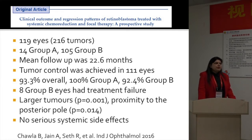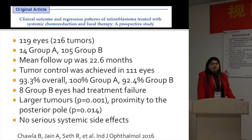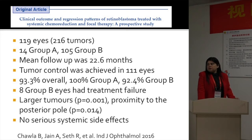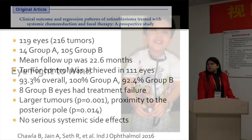We didn't use any intra-arterial or periocular chemotherapy — it was just systemic chemotherapy and focal therapy. We found that larger tumors and those with proximity to the posterior pole were more likely to fail in Group B eyes. There were no serious side effects of this treatment.